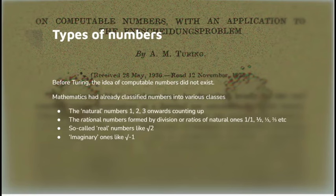The rational numbers, when we say they're rational, it just means they're ratios. It doesn't mean they're to do with reason. The so-called real numbers, like root 2, for example, and the imaginary numbers, like the square root of minus 1.